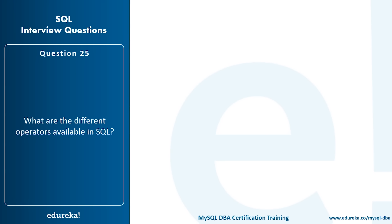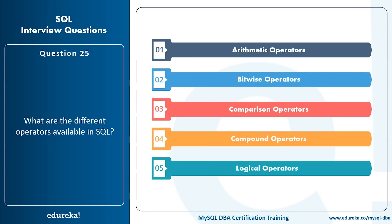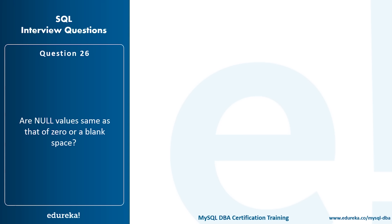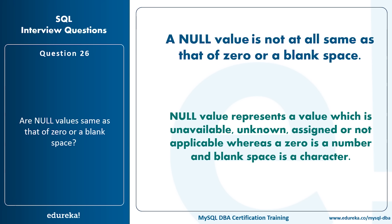What are the different types of operators available in SQL? There are mainly five types: arithmetic, bitwise, comparison, compound, and logical operators. Is a NULL value the same as zero or a blank space? No — a NULL value represents a value that is unavailable, unknown, unassigned, or not applicable, whereas zero is a number and a blank space is a character.